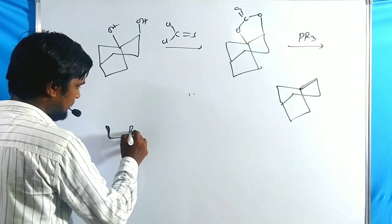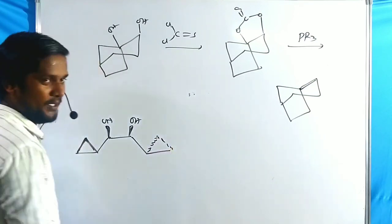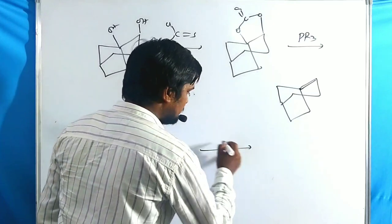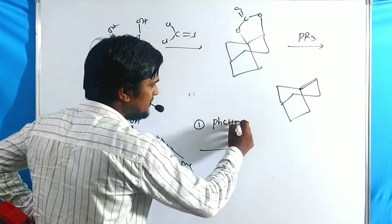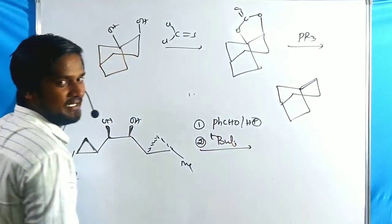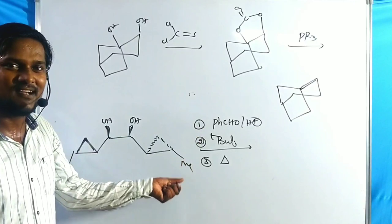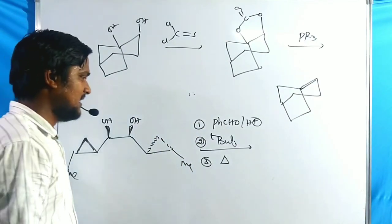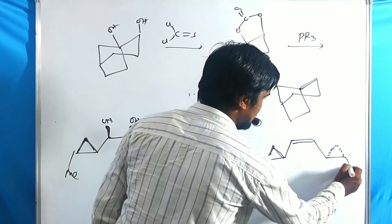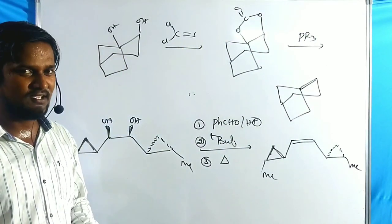Final example: a syn-diol on a cyclopropane ring (with methyl groups), prepared using the Simmons-Smith reaction, is used. In the alternative method: step 1 — treat with benzaldehyde in acidic medium; step 2 — treat with n-butyllithium or organolithium compounds; step 3 — apply heat. This creates a double bond via the dioxolane mechanism, the alternative Corey-Winter method. This is the simplest method to prepare olefins even from very sterically crowded molecules.